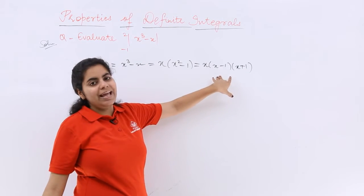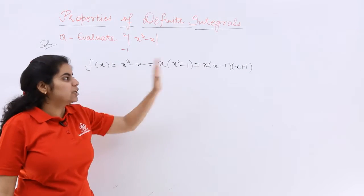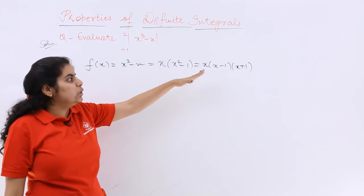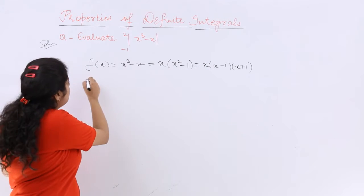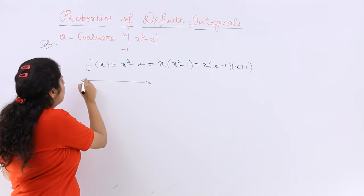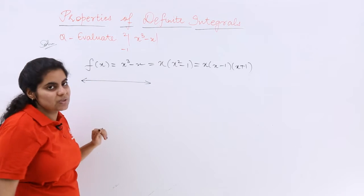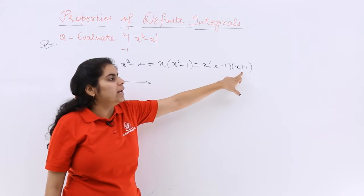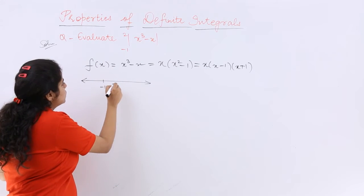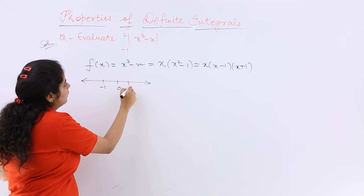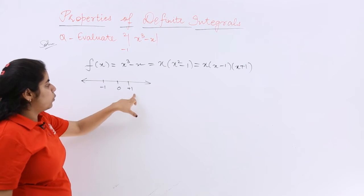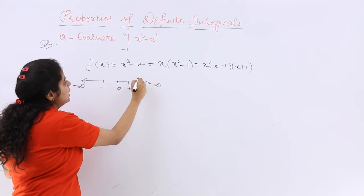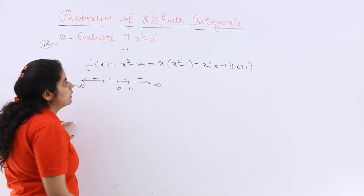So x³ - x factors as x(x - 1)(x + 1). To find the values that satisfy this, I use the number line — as I taught you in earlier chapters. Put zeros individually: x = 0, 1, and -1. Placing these on the number line and going from negative infinity to positive infinity, the signs alternate: minus, plus, minus, plus.